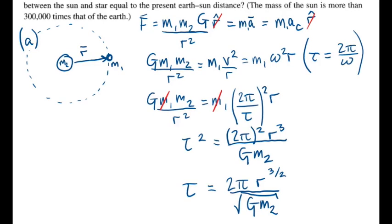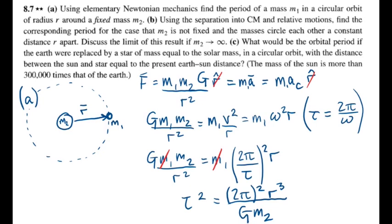Part B asks us to use the separation into center of mass and relative motions to find the corresponding period for the case that m2 is not fixed and the masses circle each other a constant distance r apart. Discuss the limit of this result if m2 approaches infinite mass.